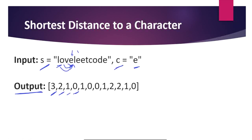Moving on to l, we have two e's next to each other — one previously and one right after — so the distance is the same and we update it to 1. The two e's themselves have distance 0 and 0. From t, we calculate which is shortest: the e before t or the e at the end. The e before t is the shortest, so we update to 1. From c, we compare the e before t and the e after d — the differences are 2 and 3 — so we finalize the array with the shortest distances between each character and c.